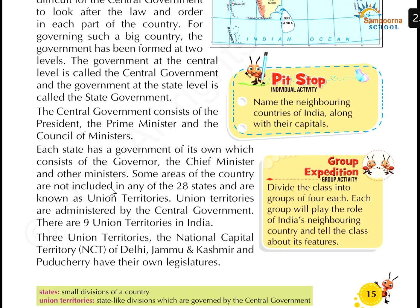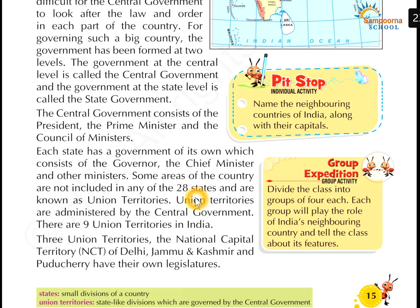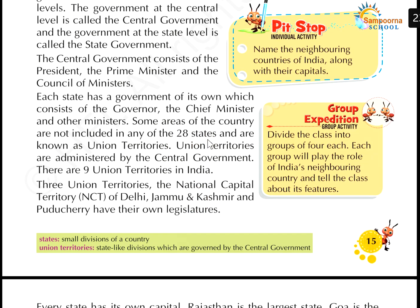Some areas of the country are not included in any of the 28 states and are called union territories. These are areas which come directly under the central government — the central government administers them directly. That is why we call them union territories. There are nine union territories.